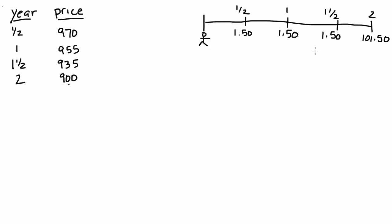We're going to try to price this bond based off of the prices of STRIPS. STRIPS are risk-free and this bond is risk-free. The prices of STRIPS are given for each six-month cash flow. For a two-year STRIPS with a face value of $1,000, we receive a $1,000 payoff in two years, and we're willing to pay $900 today to receive that $1,000 in two years.